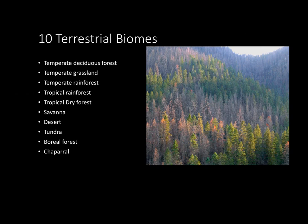The book goes into detail on basically 10 main terrestrial biomes. I'm not going to go into detail since the book gives a pretty good summary, but I'll run over them quick. The 10 are temperate deciduous forest, temperate grassland, temperate rainforest, tropical rainforest, tropical dry forest, savannah, desert, tundra, boreal forest, and chaparral. You can go back to the book and read those brief paragraphs for a good understanding of these 10 terrestrial biomes.